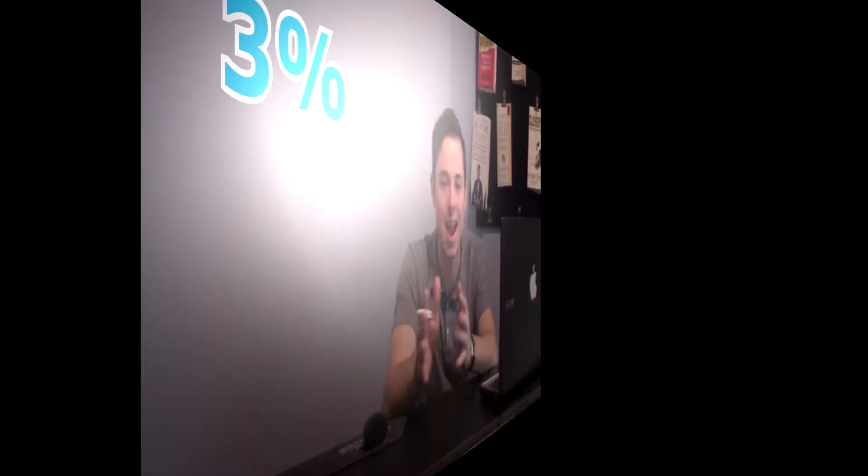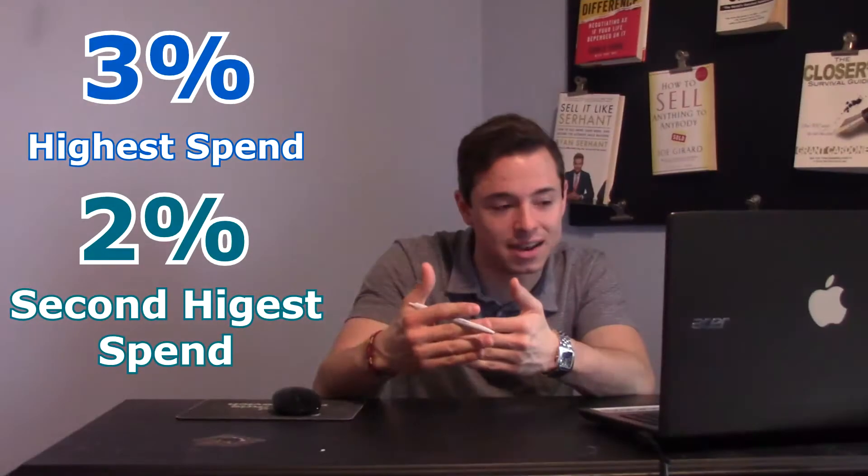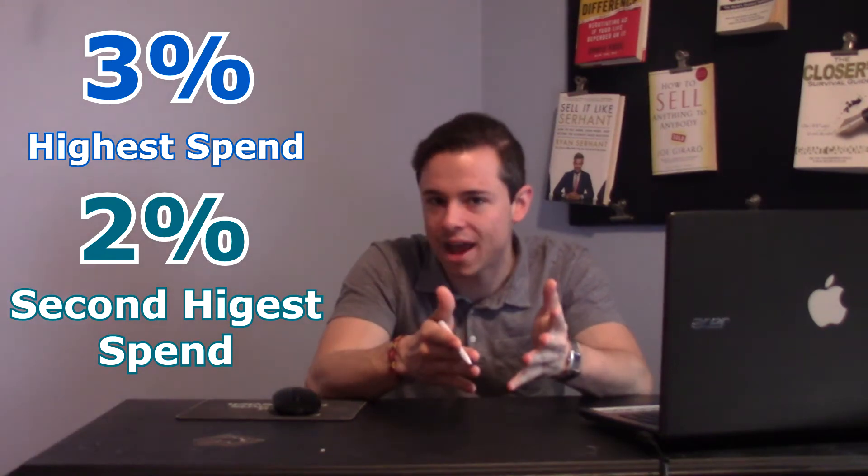You'll earn 3% cash back at any of these categories that you spend the most money in, 2% cash back on your second highest spending, and 1% back on everything else.